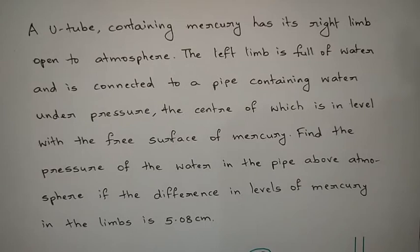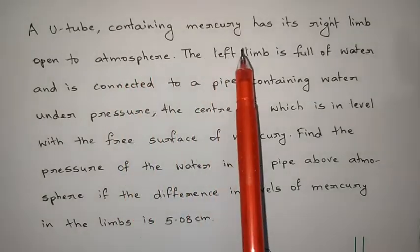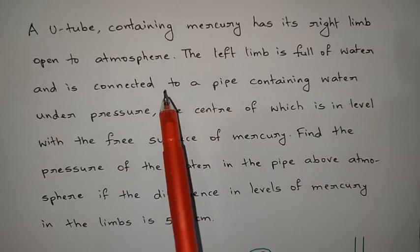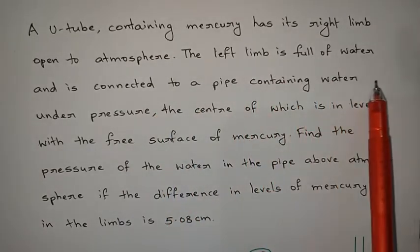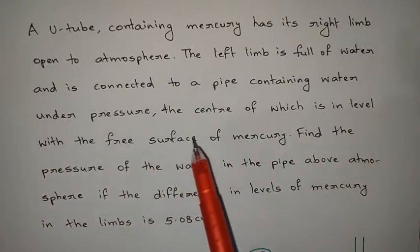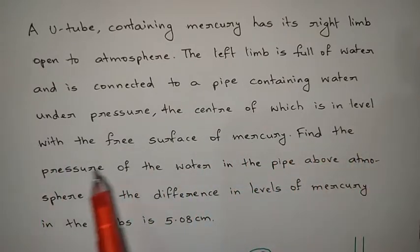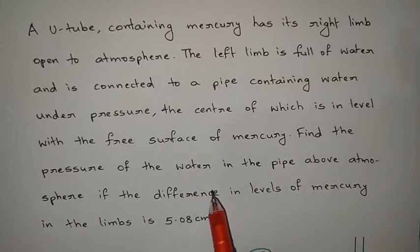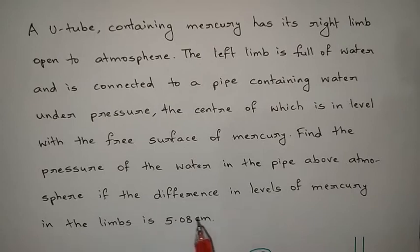A U-tube containing mercury has its right limb open to atmosphere. The left limb is full of water and is connected to a pipe containing water under pressure, the center of which is in level with the free surface of mercury. Find the pressure of the water in the pipe above atmosphere if the difference in levels of mercury in the limbs is 5.08 centimeters.